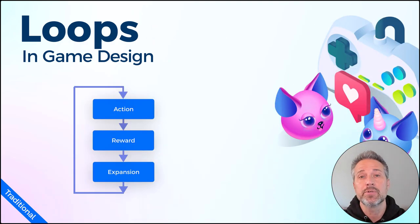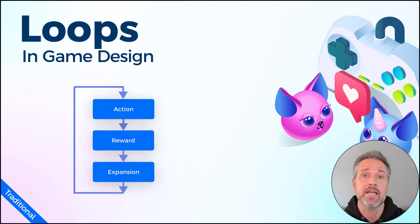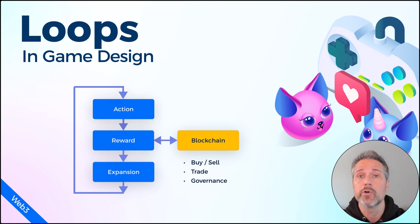A traditional game steps through a loop of gameplay: action, reward, and expansion. Let's think about the classic game Pac-Man. As Pac-Man moves through the maze, the actions are turning the character through the maze, the rewards are the pellets collected, and for expansion there are power pellets — special pickups that change his abilities, temporarily giving him invulnerability to chase enemies. Now with Web3, we have a critical change: each time your character is rewarded, you're able to interact with the blockchain. Depending on the game, after getting a reward of currency, NFTs, or other assets, you could buy and sell those on the open market, stake them for increased income, and there are governance opportunities as well.